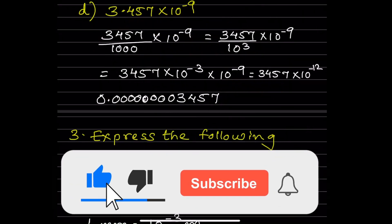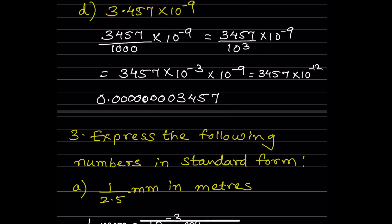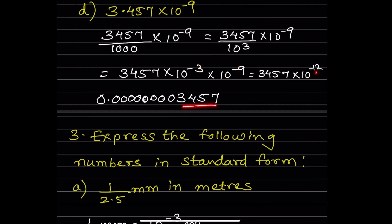For 3.457 × 10^-9 in usual form: remove the decimal to get 3457/1000 = 3457 × 10^-3. So we have 3457 × 10^-3 × 10^-9. The exponents add: -3 + (-9) = -12. So we write 3457 and count 12 places backward — 1 through 12 — then place the decimal there, giving 0.000000003457.